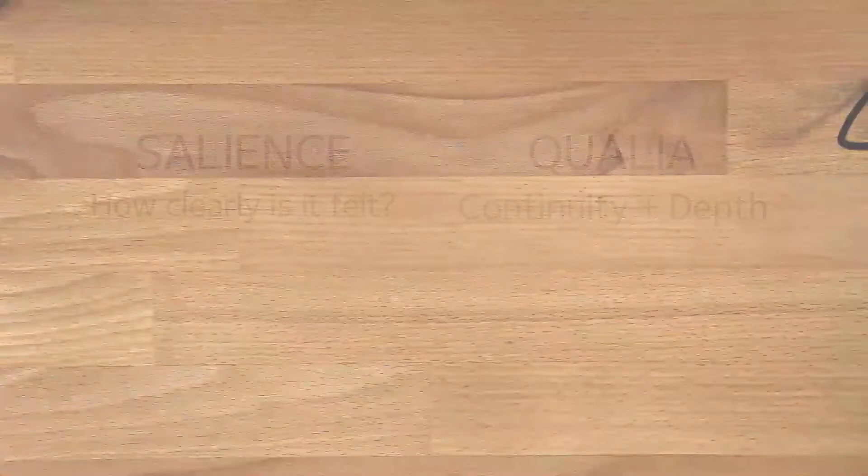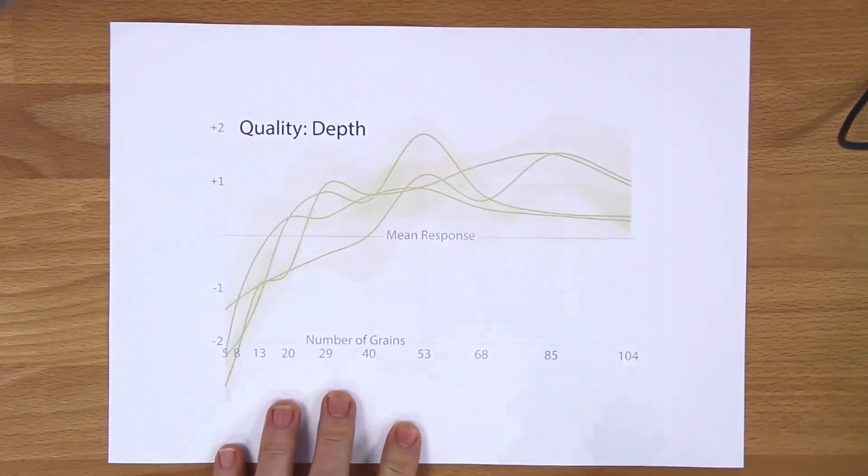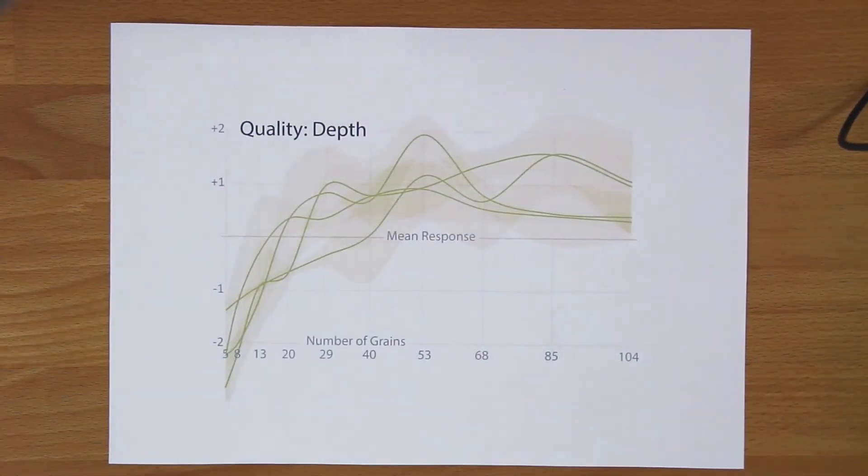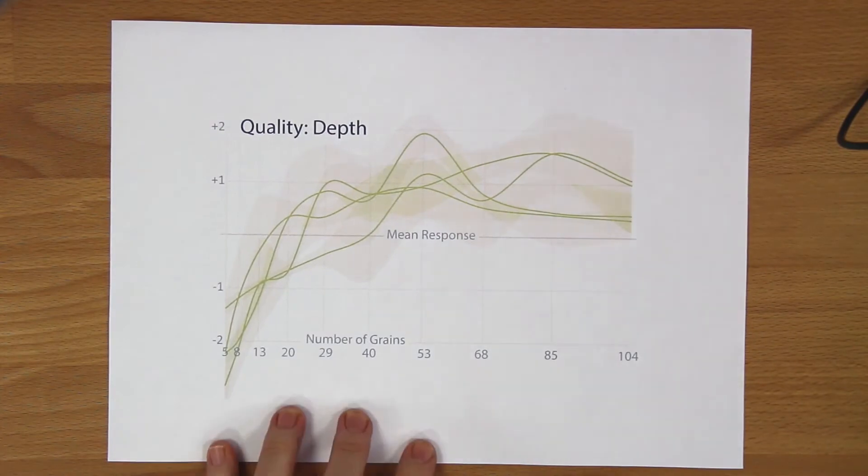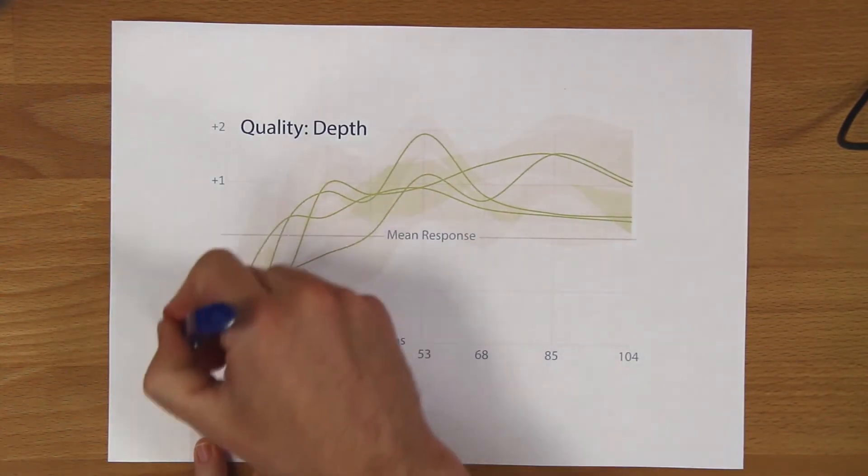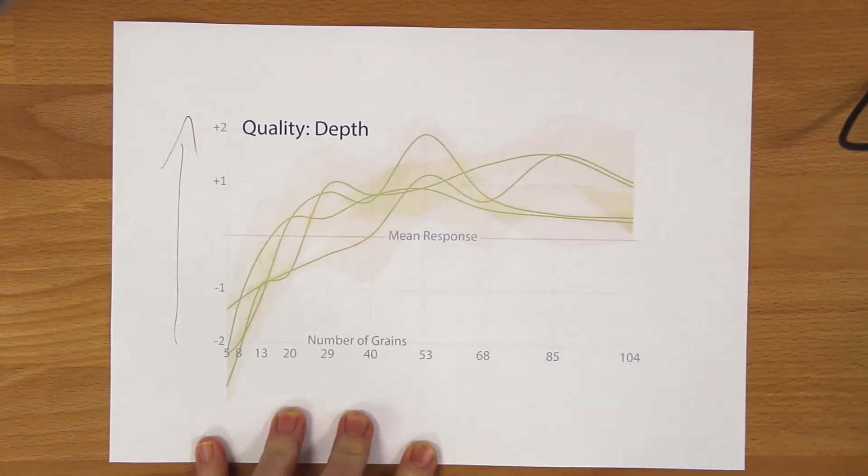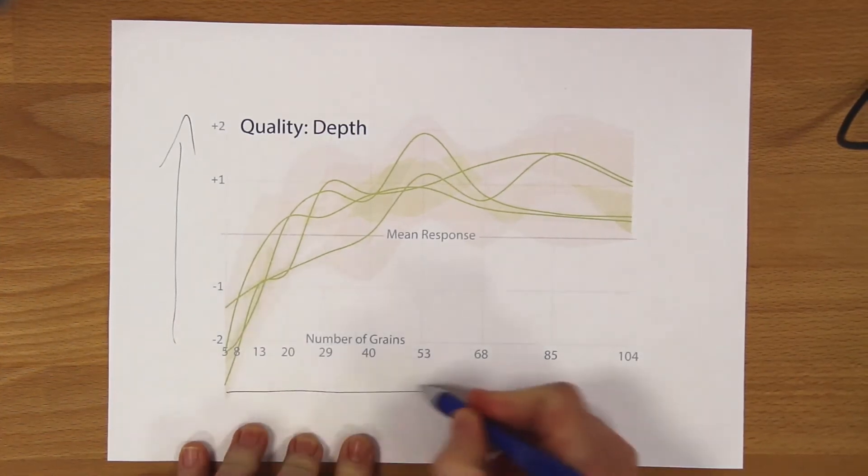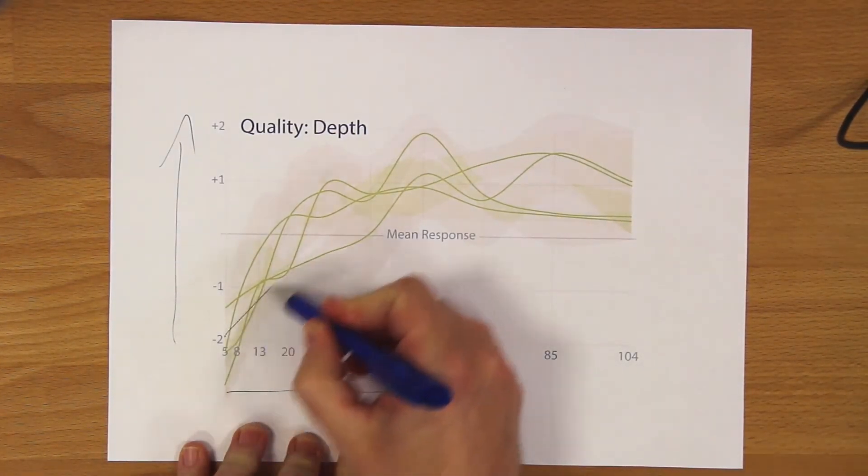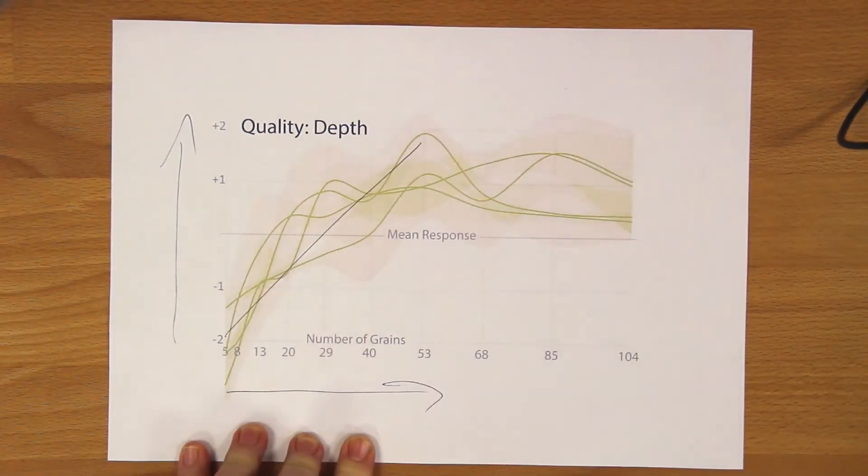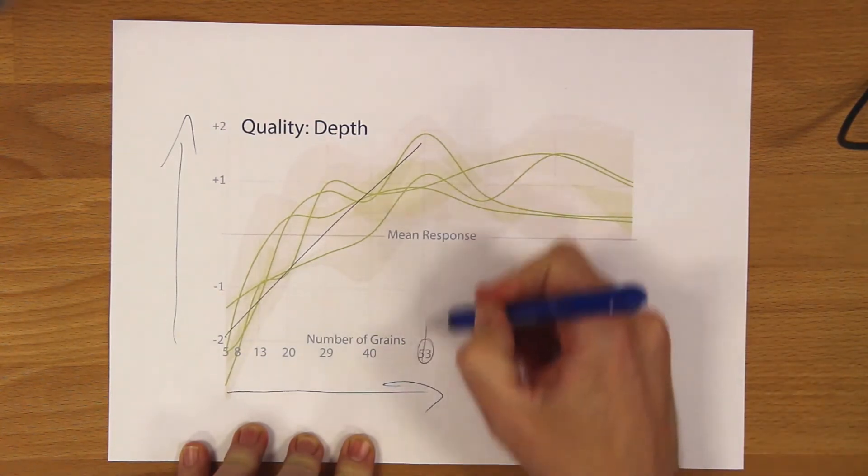So let's start with depth. So on this graph, you see four of us rating how deep they felt the illusion was. Higher ratings means you feel it deeper. And you see that with increasing number of grains, the experience of depth also increases. But only to a certain point. And then it kind of stagnated.